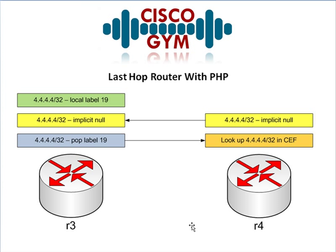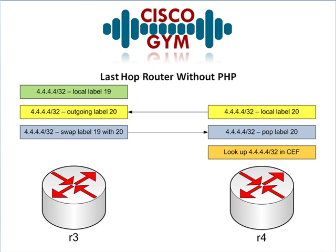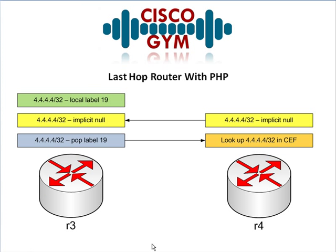Now notice the difference here — we've only done one lookup operation on R4, whereas without PHP we had to pop the label and then do a lookup. So we've saved a lookup operation, and that is what the magic of PHP is for.